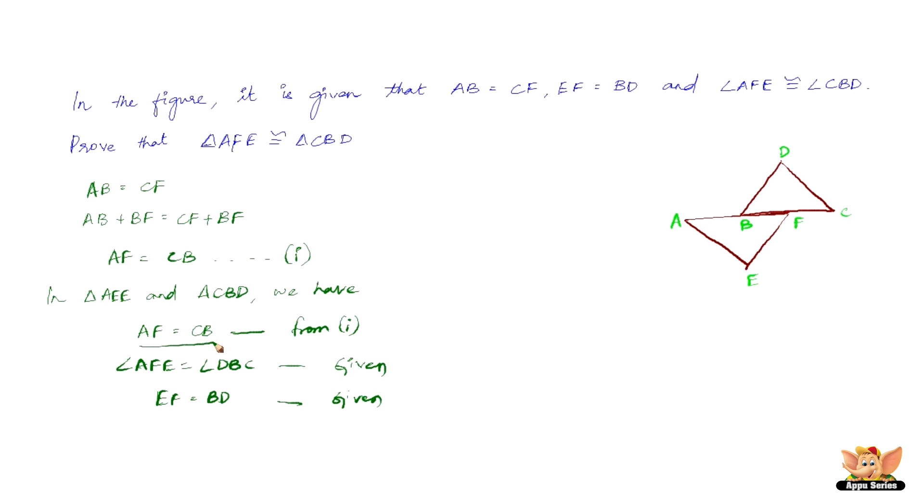Now we have got a side equals side, angle equals angle, a side equals side, SAS congruence. Therefore, by SAS criterion, we have triangle AFE is congruent to triangle CBD.